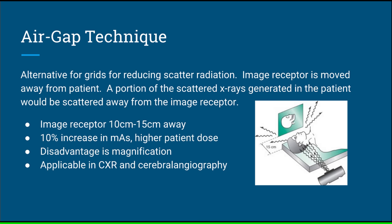An alternative method to radiographic grids is the air gap technique, another way of reducing scatter radiation and thereby enhancing image contrast. With the air gap technique, the image receptor is placed 10 to 15 centimeters away from the patient. A portion of the scattered x-rays generated in the patient would be scattered away from the image receptor and not be detected. The mAs is increased approximately 10 percent for every centimeter of air gap. The technique factors are usually about the same as for an 8:1 grid. One disadvantage of the air gap technique is image magnification with associated focal spot blur. The air gap technique has found application particularly in the areas of chest radiography and cerebral angiography.